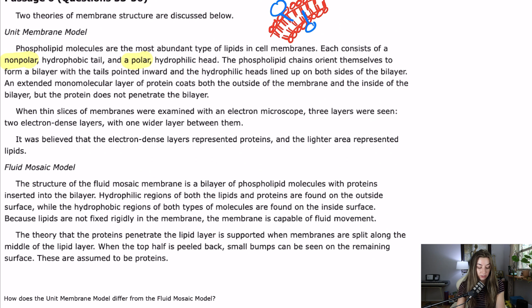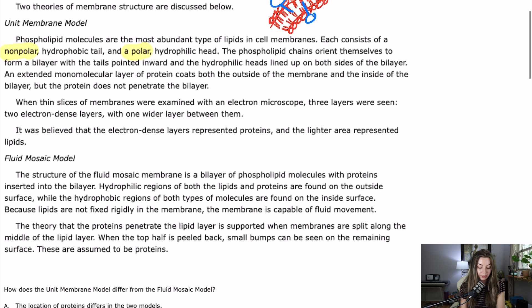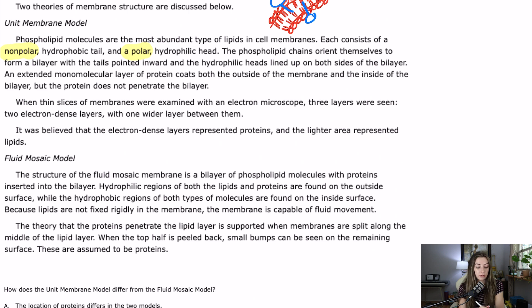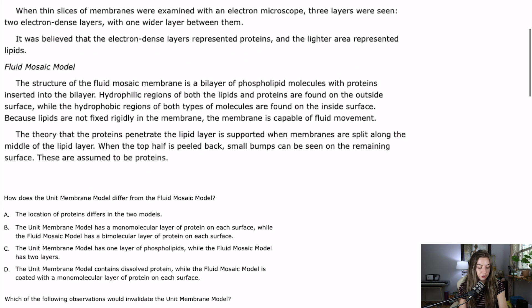Because lipids are not fixed rigidly in the membrane, the membrane is capable of fluid movement — hence fluid mosaic model. The theory that proteins penetrate the lipid layer is supported when membranes are split along the middle of the lipid layer. When the top half is peeled back, small bumps can be seen on the remaining surface; these are assumed to be proteins. Pretty straightforward passage explaining the two theories. We can go ahead and get into the questions.